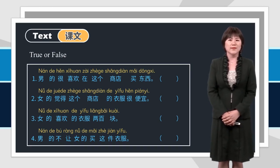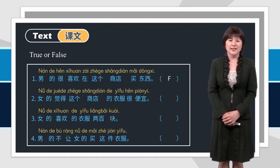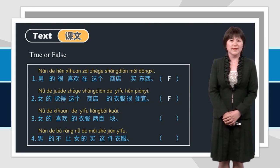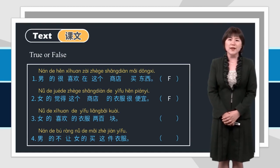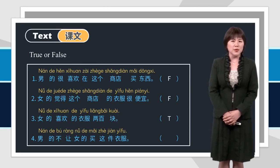There are several sentences on the screen. Please mark true or false according to the dialogue. 一：男的很喜欢在这个商店买东西 — false. 二：女的觉得这个商店的衣服很便宜 — false. 三：女的喜欢的衣服两百块 — true. 四：男的不让女的买这件衣服 — false.